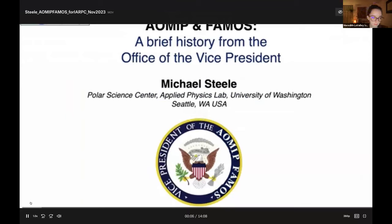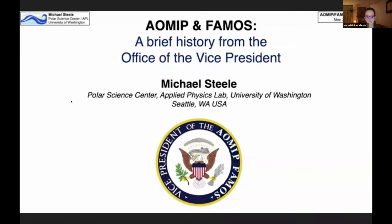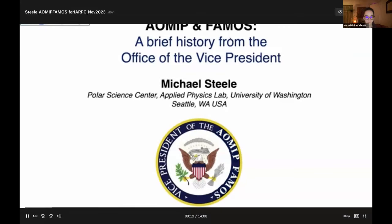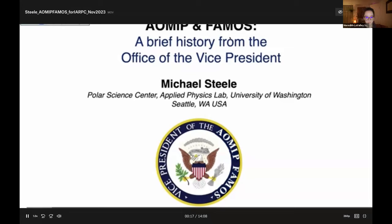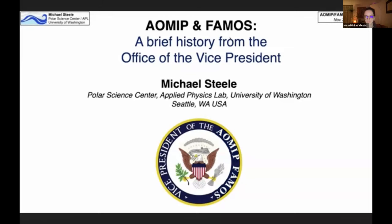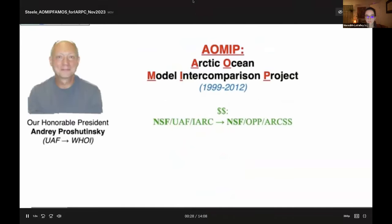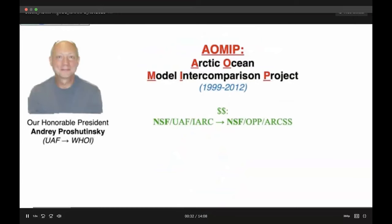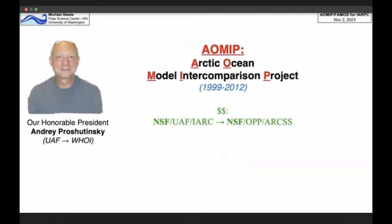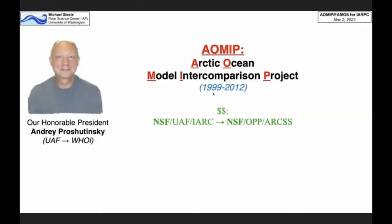This is Mike Steele from the University of Washington in Seattle. I'm going to give a short talk about AOMIP and FAMIS — two acronyms I will explain. I call myself the vice president because I was kind of second in charge during these two projects. The leader was Andre Proschatinsky, who was at UAF in Fairbanks and then moved to Woods Hole. Andre is the reason all of this existed — his idea was called AOMIP first, the Arctic Ocean Model Intercomparison Project, which lasted a little over 10 years.